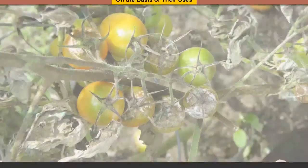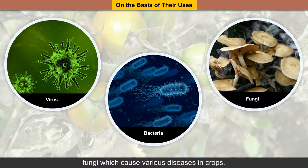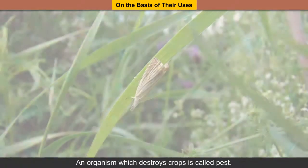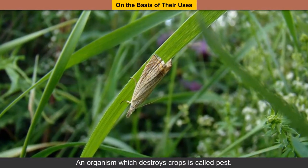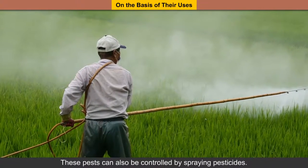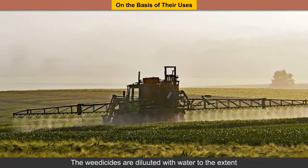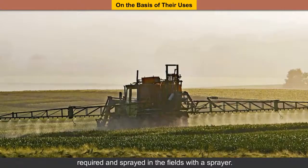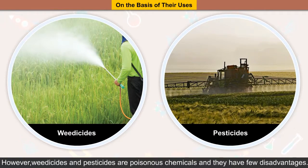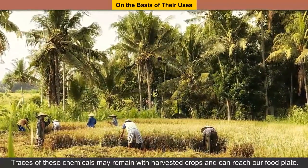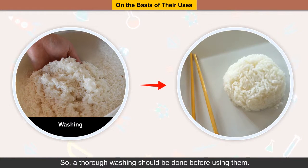Crop protection: There are some microorganisms like virus, bacteria and fungi which cause various diseases in crops. Small animals such as rats, birds and insects also destroy crops. An organism which destroys crops is called a pest. These pests can be controlled by spraying pesticides. Some common pesticides are DDT, BHC, malathion, sulfur and warfarin. Weedicides are diluted with water and sprayed in the fields with a sprayer. However, weedicides and pesticides are poisonous chemicals and have few disadvantages. The health of farmers can get affected by their continuous exposure. Traces of these chemicals may remain with harvested crops and can reach a food plate, so a thorough washing should be done before using them.